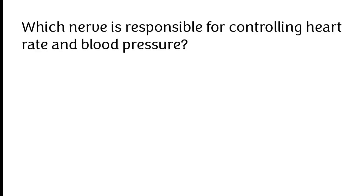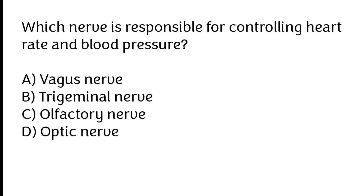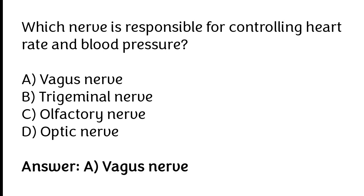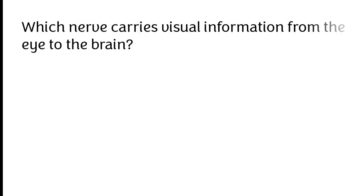Which nerve is responsible for controlling heart rate and blood pressure? Vagus nerve, trigeminal nerve, olfactory nerve, optic nerve. The correct answer is option A — the vagus nerve is responsible for controlling heart rate and blood pressure.